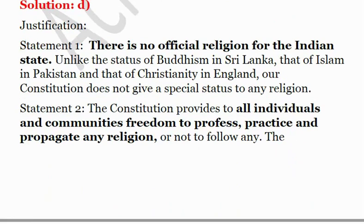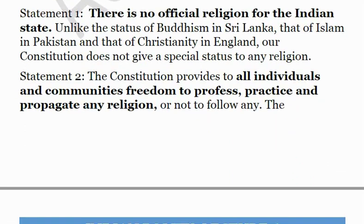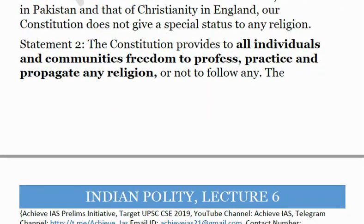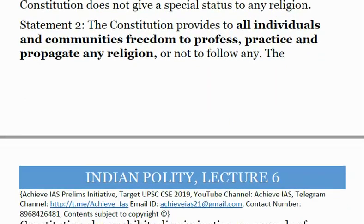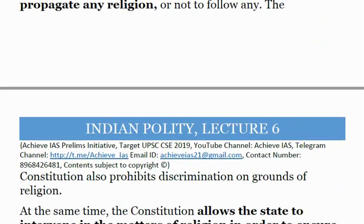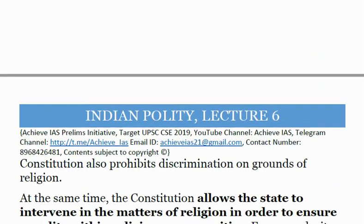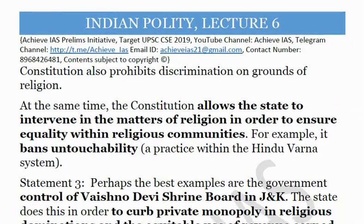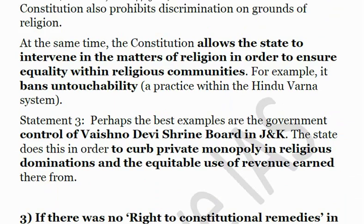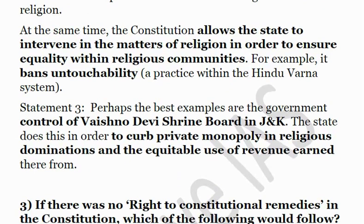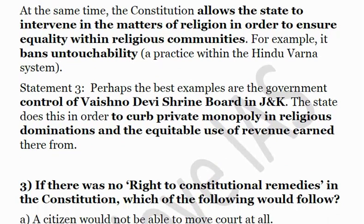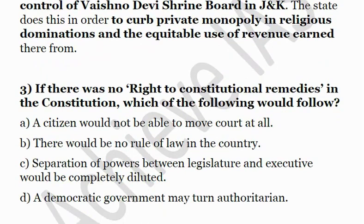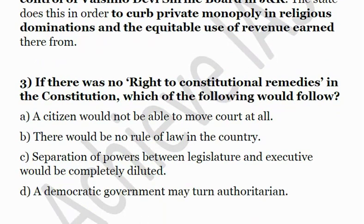So all three statements are correct — the answer is D. There is no official religion for India; all individuals can profess, practice, and propagate any religion. The Constitution prohibits discrimination on grounds of religion. The state can control religious institutions — for example, the Vaishno Devi Shrine Board is in state control — to curb private monopoly.